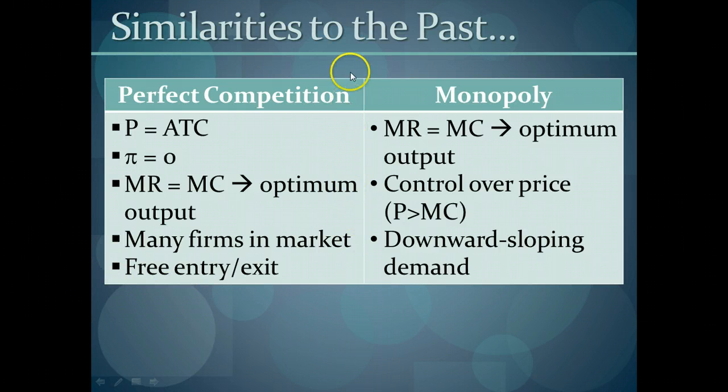We can also say, though, that it's like a monopoly in the sense that they both follow the optimum output rule and that in both cases, firms have control over their price, that their price is greater than their marginal cost because of the downward sloping demand curve that both types of market structures face.